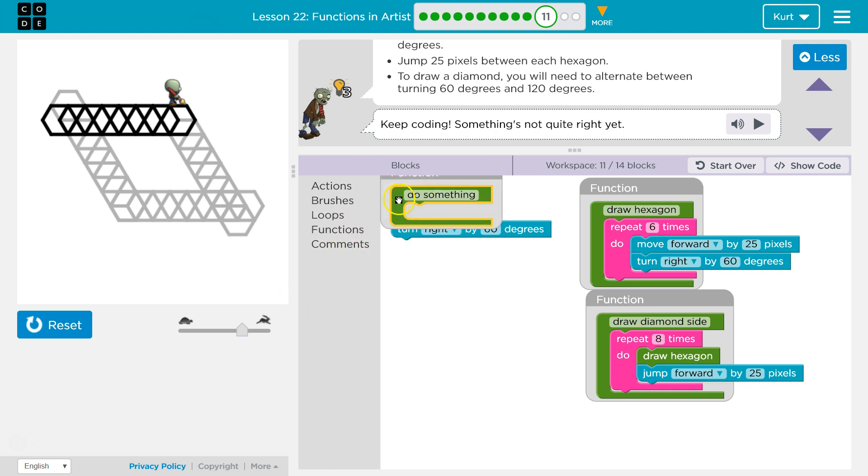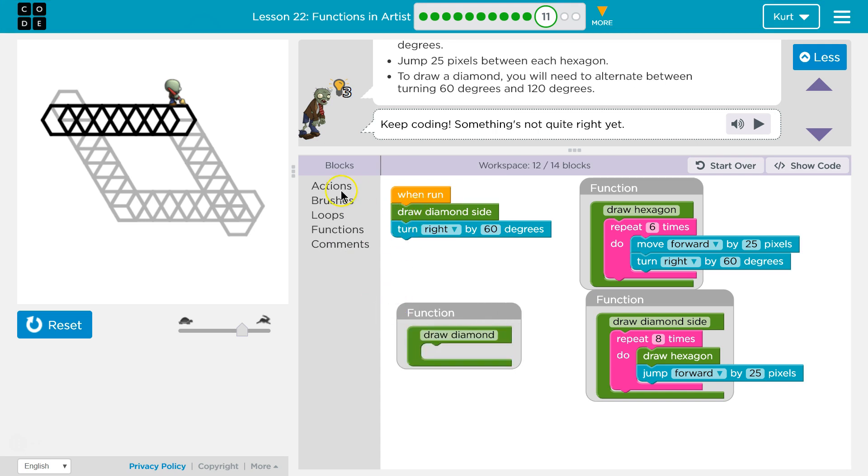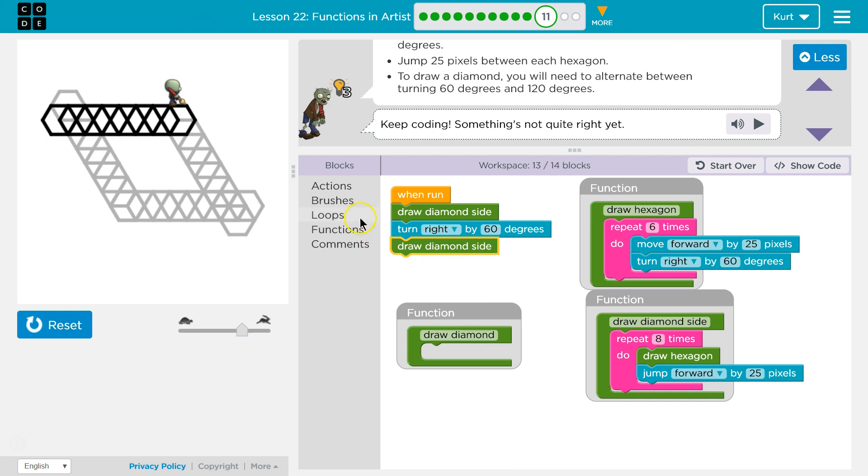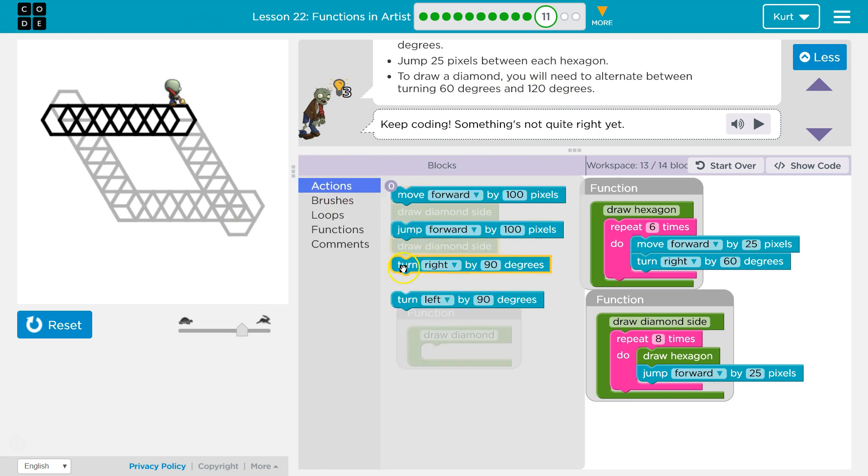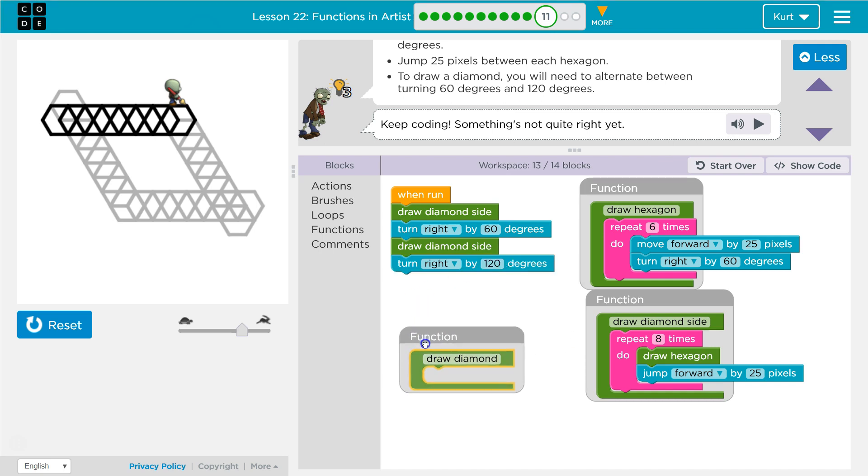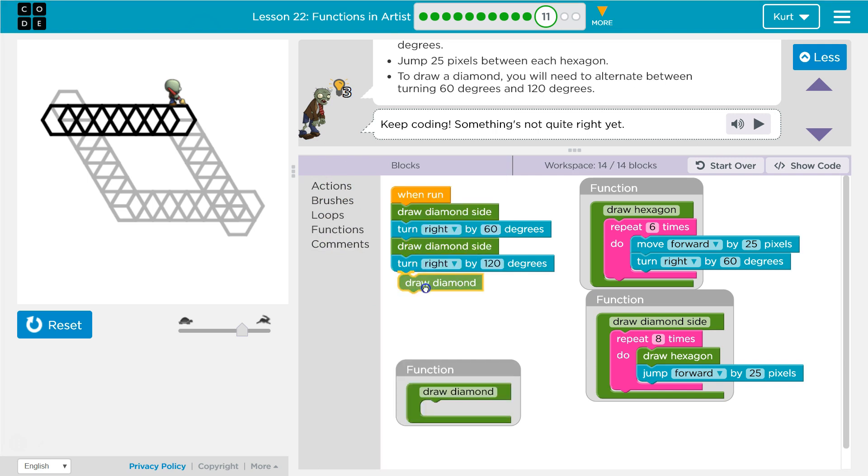Let's go ahead and do a function. Then we want to, like before, remember we're going to call the function again. Draw the side of a diamond. And at the end of this though, where do we want to turn? It's not 60. It's now 120. So turn 120. And again, this is going to be like before. I'll show you what I mean. We're going to then want to draw a diamond side.